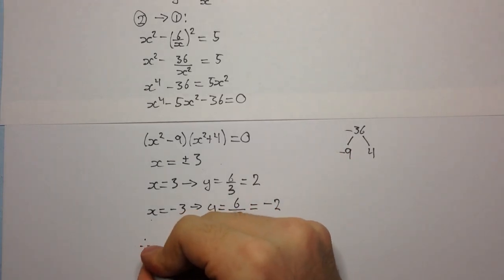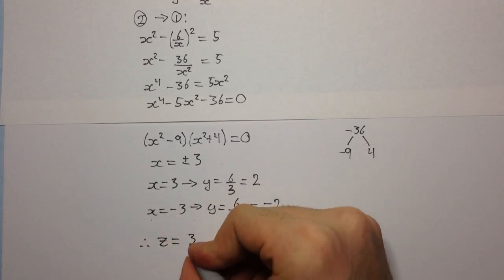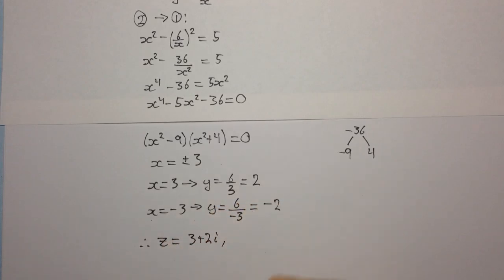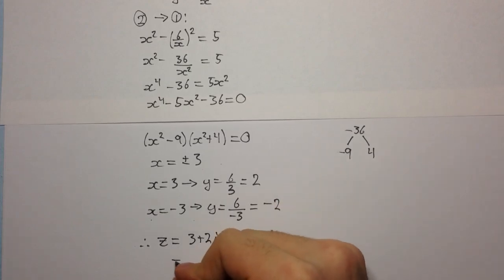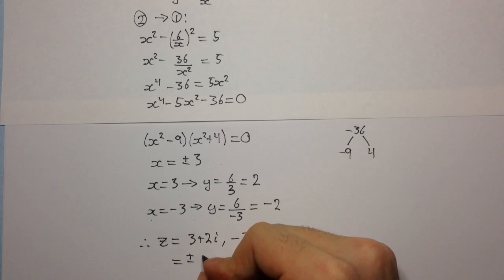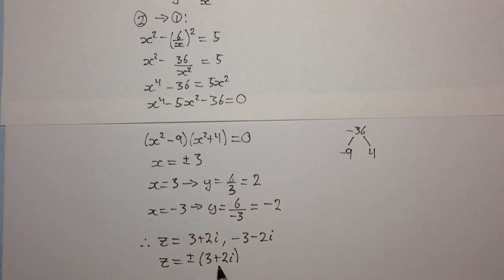And so our complex numbers are z equals 3 plus 2i and minus 3 minus 2i. Or we can write plus or minus bracket 3 plus 2i. And so these are the two square roots of the complex number 5 plus 12i.